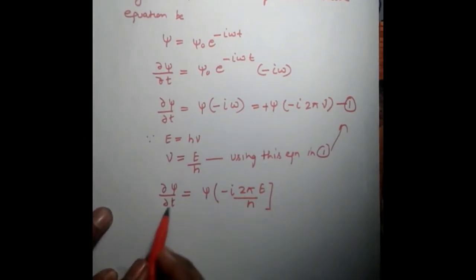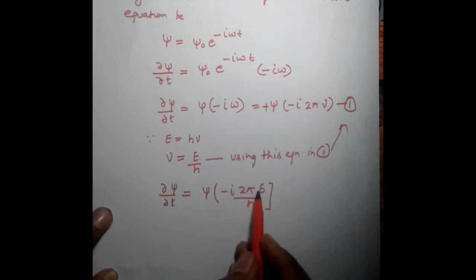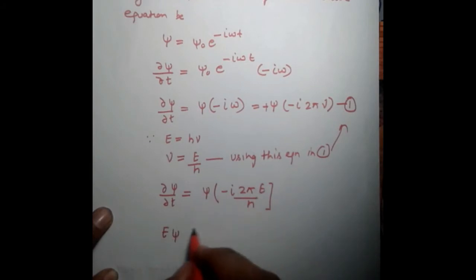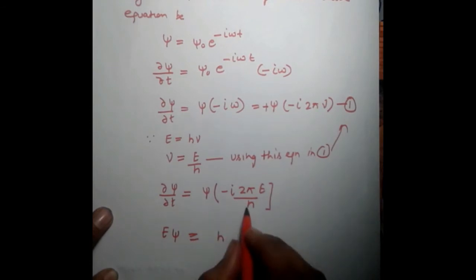Now, arranging this, keeping Eψ at one side and putting the other to the opposite side, take h/(2π).